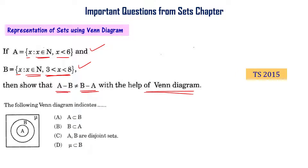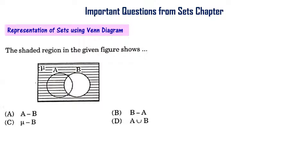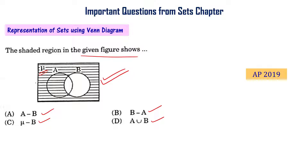The following Venn diagram indicates — this is from the class A/B final exam of 2017. The shaded region in the given figure shows a Venn diagram with sets A, B, and universal set μ. We have four choices: A minus B, μ minus B, B minus A, or A union B. Identify which the shaded region correctly represents. This is from the AP Final Exam 2019.